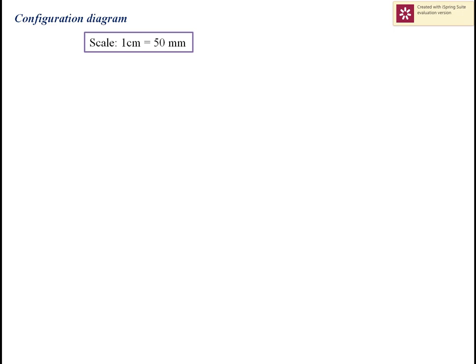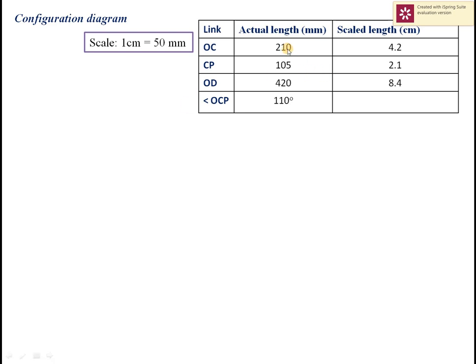The first step is to draw the configuration diagram. Comparing the dimensions and paper size, considering A4 paper, we take a scale of 1 centimeter equals 50 millimeters. The actual length of OC is 210 mm, which scales to 4.2 centimeters. Length CP is 105 mm, scaling to 2.1 centimeters. Link OD is 420 mm, scaling to 8.4 centimeters.